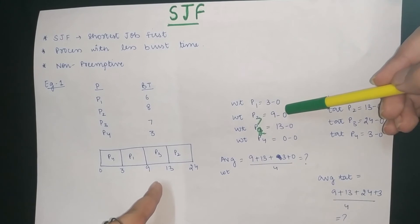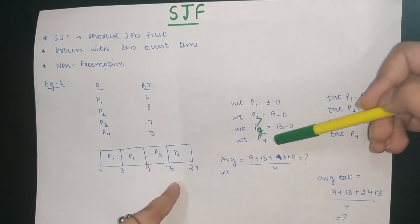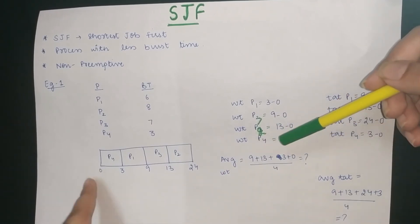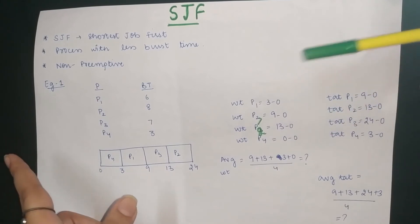P3 is 9, 9 minus 0. P2 is 13 minus 0. It means that P2 arrives at 13 and 0 is the arrival time which is not given, which is equal to 0. P4 is 0 minus 0, so P4 is 0.